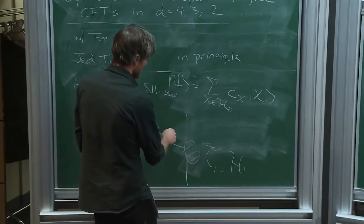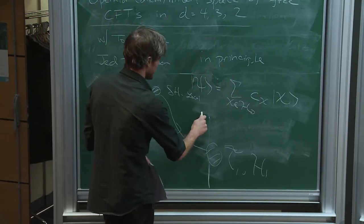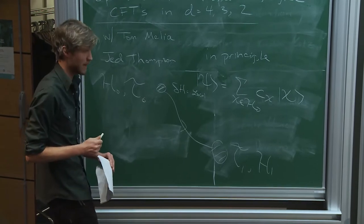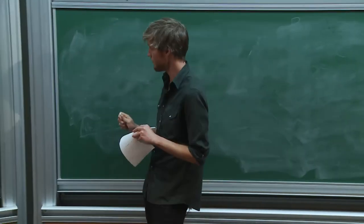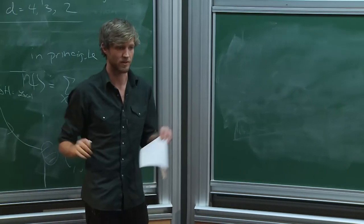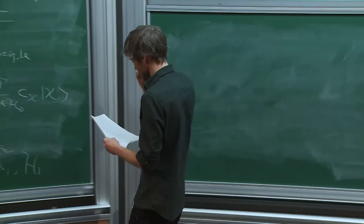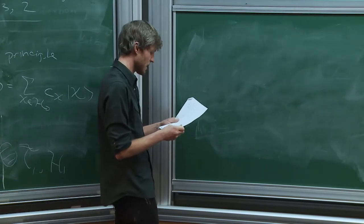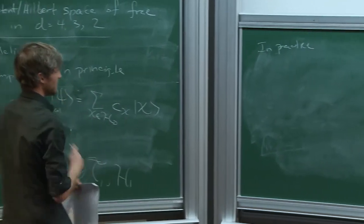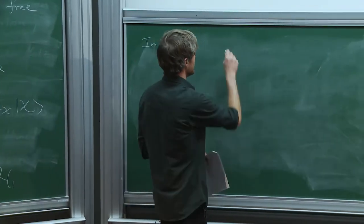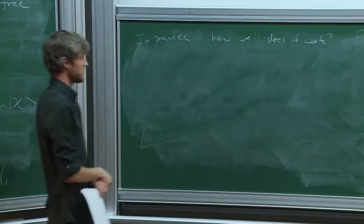I'll be talking about free theories, going through essentially a Fock-based construction. You need to make sure you have the complete Hilbert space, and you might worry about superselection sectors. Instantons and extended objects — whether these need to be included or can be captured by free field states — that's a question I don't really know the answer to. The in-practice question is, assuming we can do this expansion, how well does it work? That's really what this workshop is about.